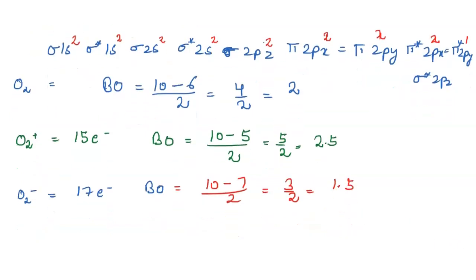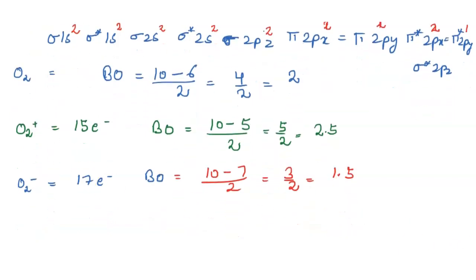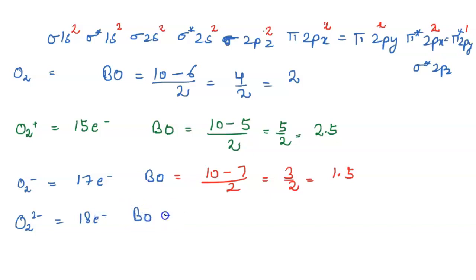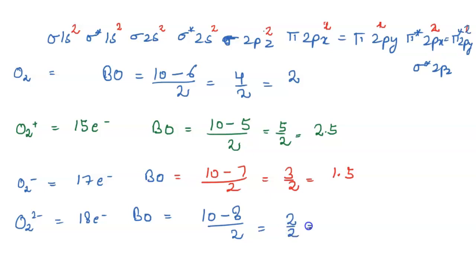Next is O2 2 negative. O2 2 negative has 18 electrons, so 1 more anti-bonding electron is added. Bond order equals 10 minus 8 divided by 2, which equals 2 upon 2, which equals 1.